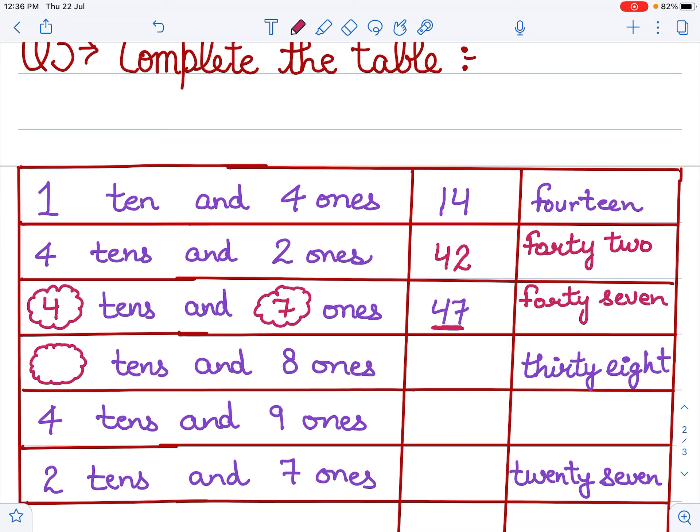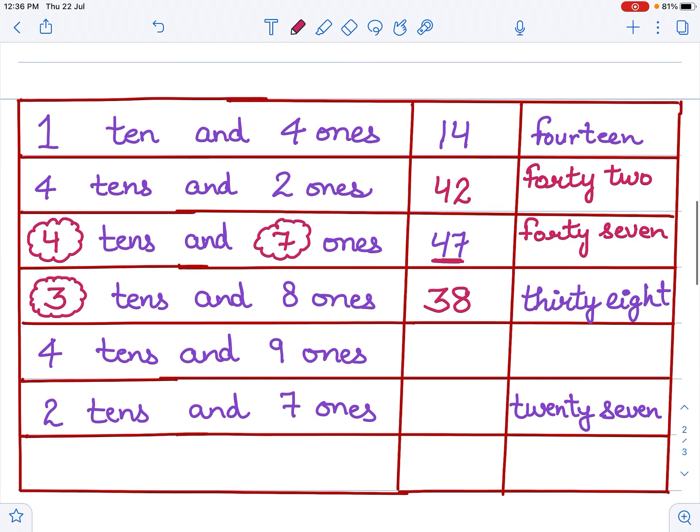Now we have, look, dash tens and eight ones. What is it? We will write in words. 38. So what will it be? Three tens and eight ones, 38.